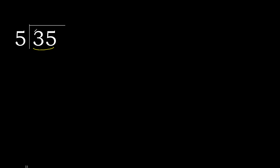5 multiplied by which number is nearest to 35 but not greater? 5 multiplied by 8 is 40, which is greater. 5 multiplied by 7 is 35, which is not greater. 35 minus 35 is 0.